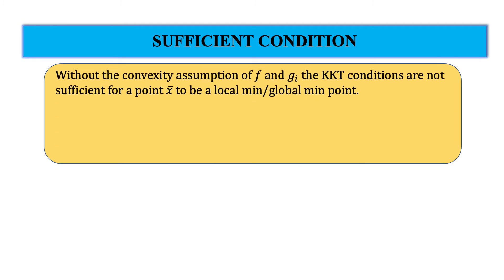But now we note that the convexity assumption of F and Gi in the KKT conditions is not sufficient for a point X bar to be a local or global minimum. These convexity assumptions of F and Gi for all i are sufficient conditions. Without these conditions we cannot say that the point X bar is a local minimum.